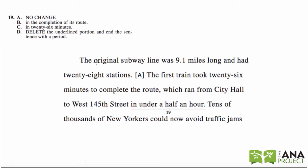Alright, number 19 — I'm going to start here because I want to gain the context. It's very important for every ACT English question. The original subway line was 9.1 miles long and had 28 stations. The first train took 26 minutes to complete the route, which ran from City Hall to West 145th Street in under half an hour. Tens of thousands of New Yorkers could now avoid traffic jams.